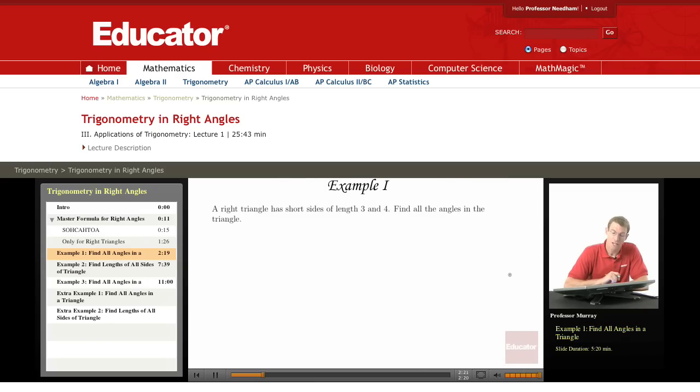So in the first example, we have a right triangle with short sides of length 3 and 4, and we want to find all the angles in the triangle.